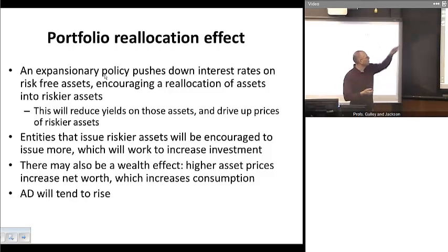You also have what's called the portfolio reallocation effect. And what happens here is that an expansionary policy will tend to push down interest rates on risk-free assets. In the case of the Federal Reserve, for example, traditionally or historically, the Fed has purchased risk-free federal government assets, especially short-term financial assets. And so that the interest rates on those assets would tend to fall.